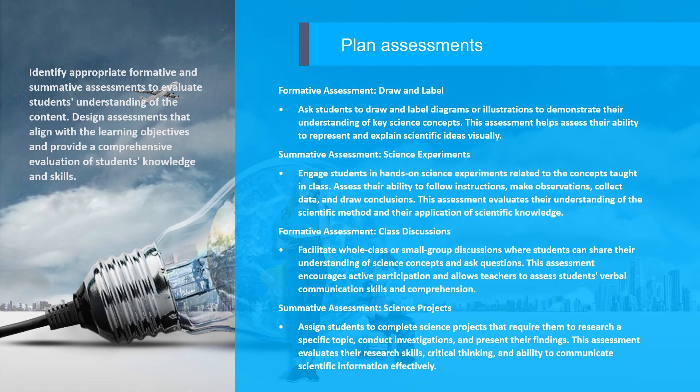Step 6: Plan assessments. Identify appropriate formative and summative assessments to evaluate students' understanding of the content. Design assessments that align with the learning objectives and provide a comprehensive evaluation of students' knowledge and skills. Examples include: Formative assessment — Draw and label: ask students to draw and label diagrams or illustrations to demonstrate their understanding of key science concepts, assessing their ability to represent and explain scientific ideas visually. Summative assessment — Science experiments: engage students in hands-on science experiments, assessing their ability to follow instructions, make observations, collect data, and draw conclusions, evaluating their understanding of the scientific method.